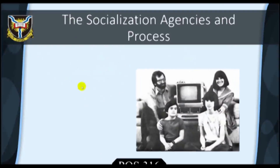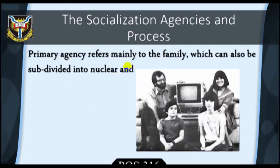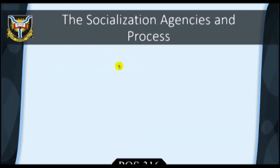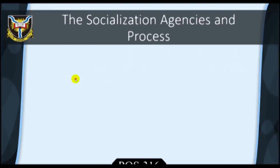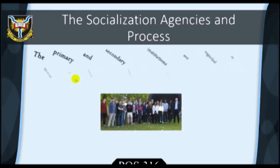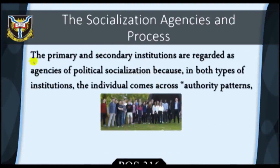The primary agency refers mainly to the family, which can also be subdivided into nuclear and extended. On the other hand, secondary agencies refer to those relatively formal and extra-familiar institutions in which a child moves from childhood to adulthood. The most prominent secondary agency is probably the school. Other secondary agencies include associational, that is peer group, occupational, and professional groups.